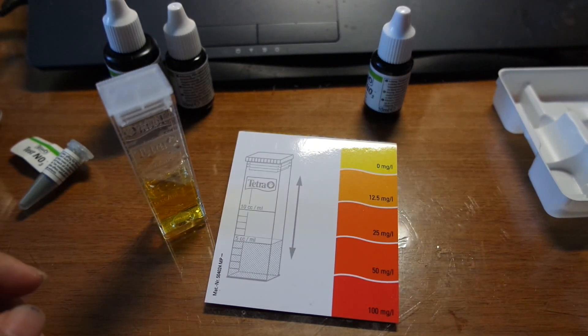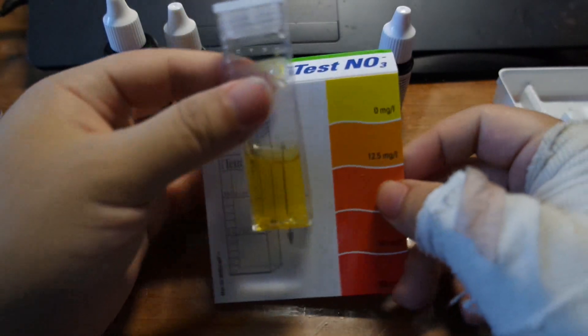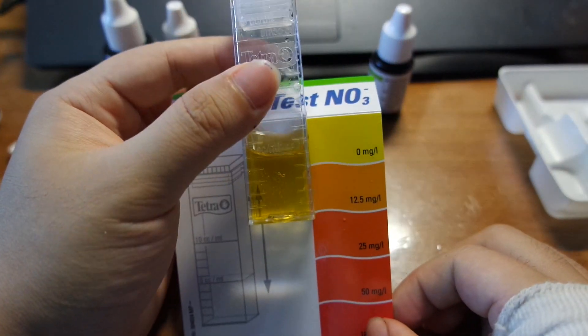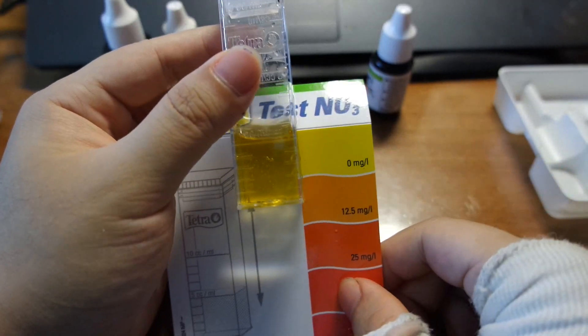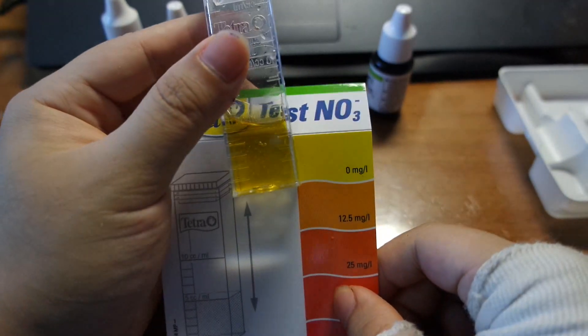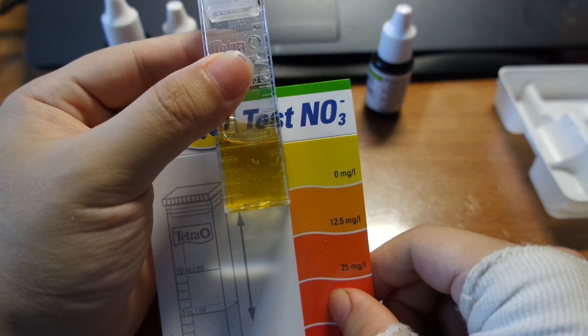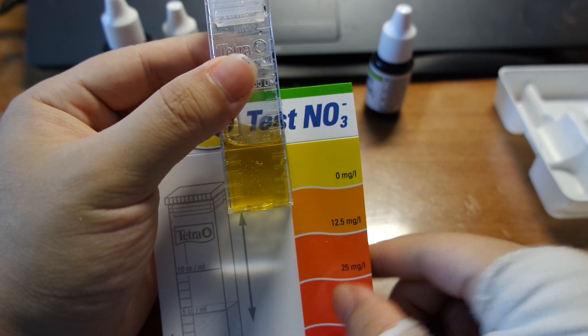Okay so it has been about 10 minutes and the reaction is done. Basically you set it up there and you see where the tank is at and you can see it is right about 0 there. Yep so my nano planted tank has practically no nitrates in it which is good. Moving on.